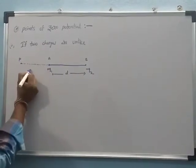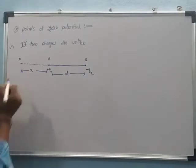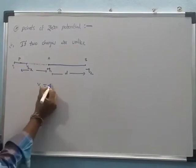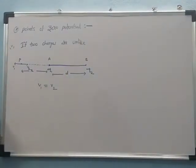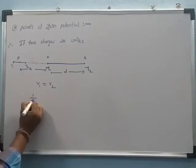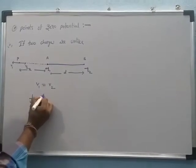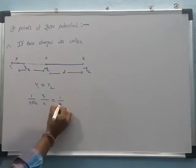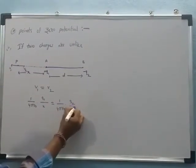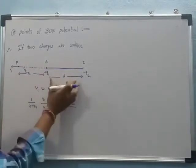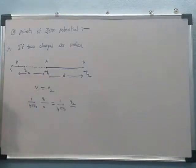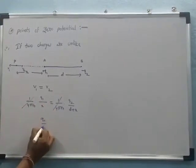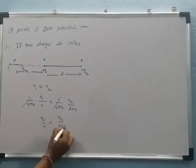Consider point P at distance X from point A. At point P, both electric potentials V1 and V2 are equal. Using the formula for electric potential: (1/4πε₀) × Q1/X = (1/4πε₀) × Q2/(D+X). Cancelling the common factor, we get Q1/X = Q2/(D+X).